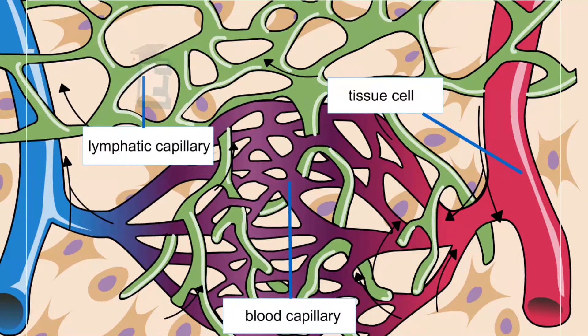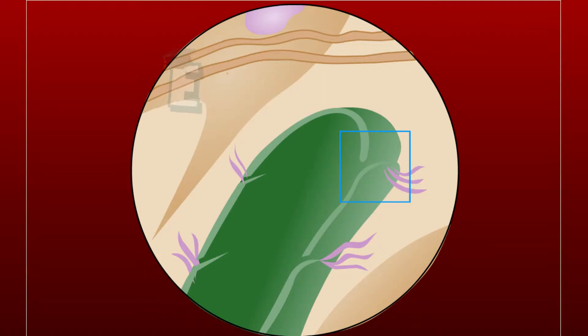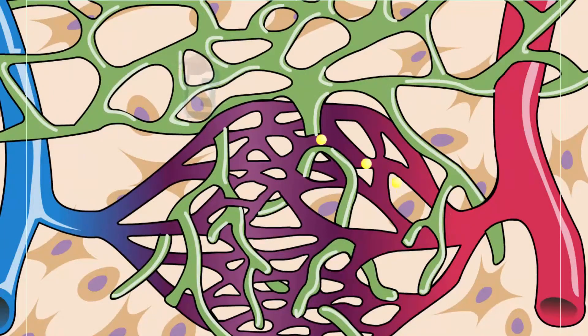The lymphatic vessels have many branches and there are openings at their edges. And the openings are not connected to each other.